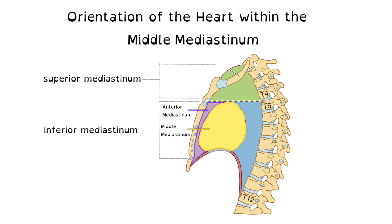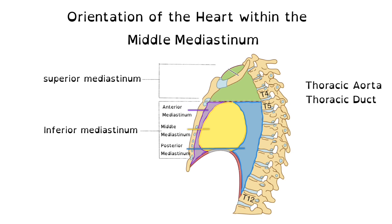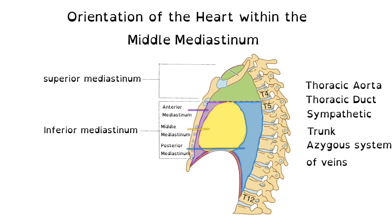It's important to be aware of the orientation of the heart in the middle mediastinum. The posterior mediastinum runs from the level of T5 to T12. Key structures within the posterior mediastinum include the thoracic aorta, the thoracic duct, the sympathetic trunk, the azygous veins, and the esophagus.